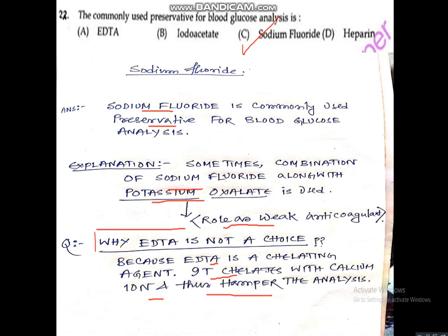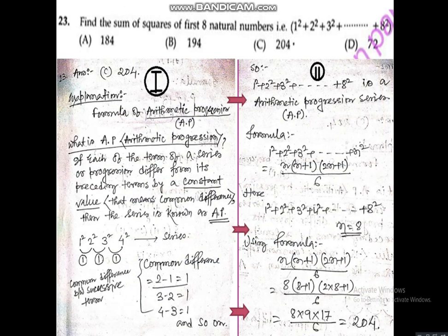The next question is a math question. They asked: find the sum of squares of the first eight natural numbers, that is 1² + 2² + 3² up to 8². The correct answer is option C, that is 204.